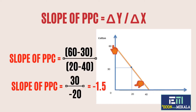The slope of PPC can be calculated using the delta y divided by delta x formula. Delta y is the difference in quantity of the product on the y-axis. Delta x is the difference in quantity of the product on the x-axis.